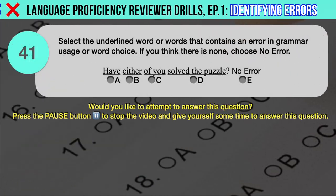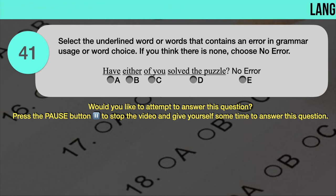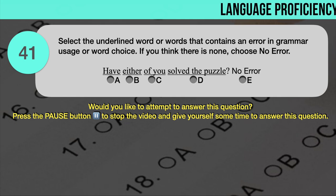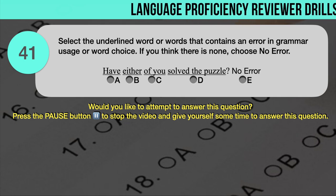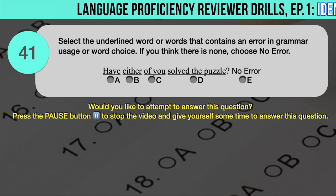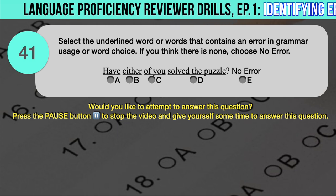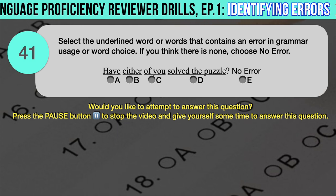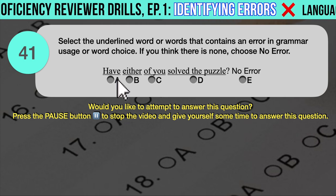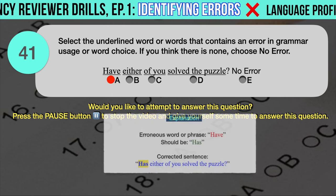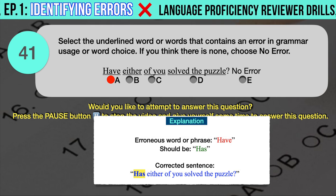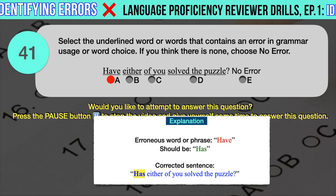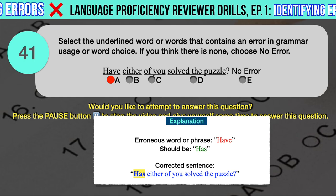Drill question number 41. 'Have either of you solved the puzzle?' The underlined words are: A. Have, B. Either, C. Of you, D. Solved the puzzle. The correct answer is A. 'Have' should have been 'has,' since the subject 'either of you' is singular. Correct sentence: Has either of you solved the puzzle?